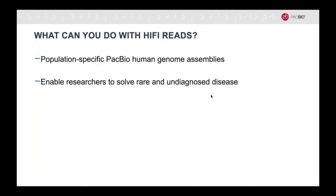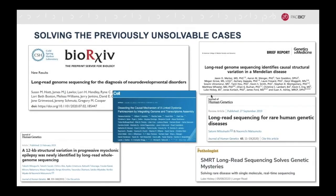Variant detection is also a very important application that can help researchers identify rare and undiagnosed diseases. Whole exome sequencing and whole genome sequencing with short reads only solve less than 50% of rare disease cases, whereas variant detection with HiFi sequencing has proven very successful in solving previously unsolvable cases, decreasing the decade-long diagnostic odyssey.